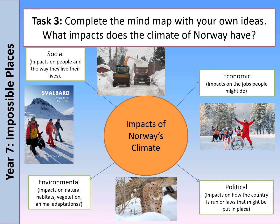Think about the way in which people live their lives and the sports that people will do in Norway at school. For example, children in Norway will have ski lessons during their PE lessons — that's a social impact on people. It might also impact the way we dress and the way we build our buildings. Can you think of any animals that live in the Arctic? Here we've got a picture of a snow leopard — how might it have adapted to living in this climate? What about polar bears, which are found in the northern parts of Norway too? Think of as many different impacts that the climate might have on Norway.